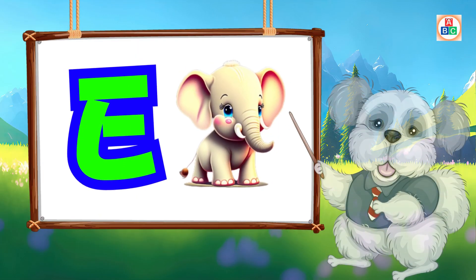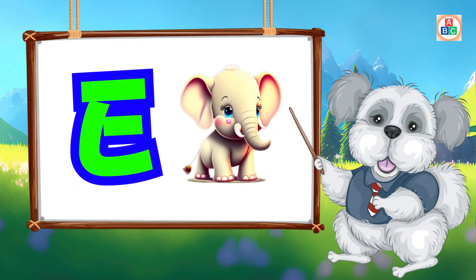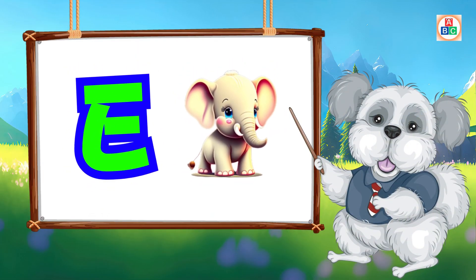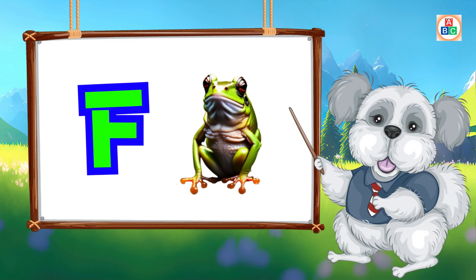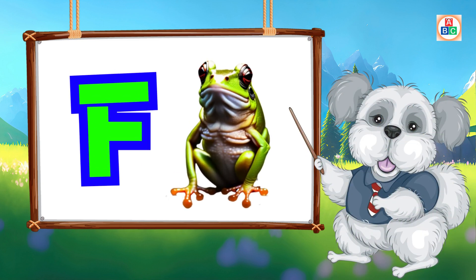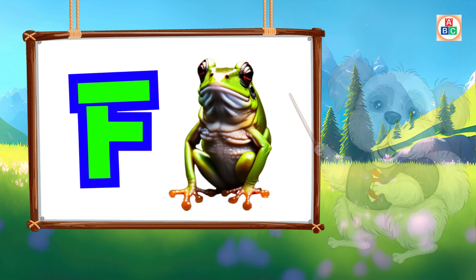E is for elephant, e-e-elephant. F is for frog, f-f-frog.